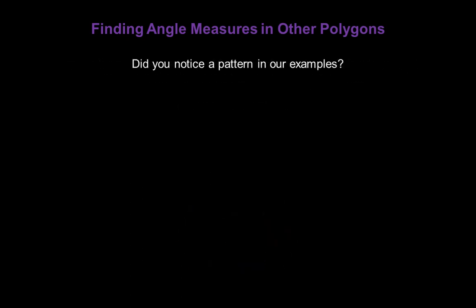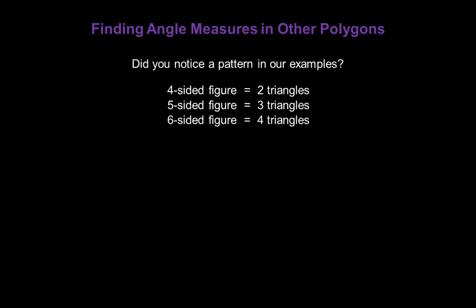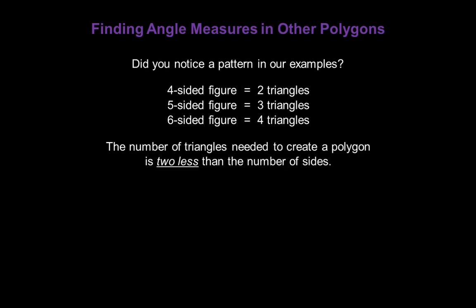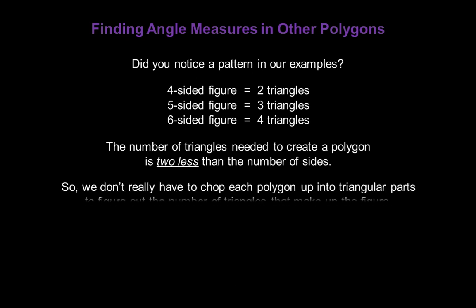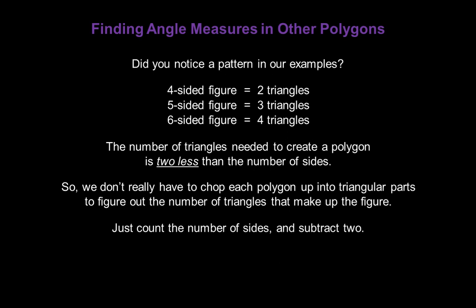Did you notice a pattern? A four-sided figure is made up of two triangles; a five-sided figure, three triangles; a six-sided figure, four triangles. The number of triangles needed to create a polygon is two less than the number of sides. So we don't need to draw the triangles — just count the number of sides and subtract two. The number of sides minus two equals the number of triangles in any polygon.